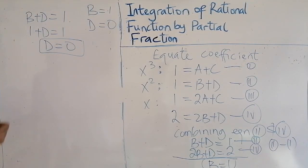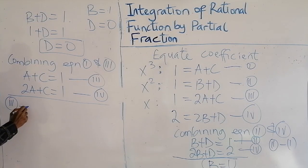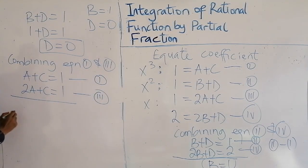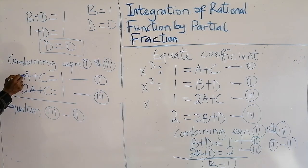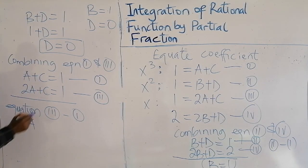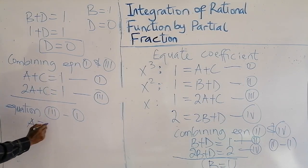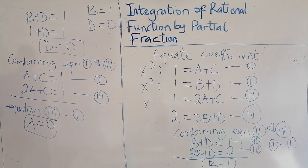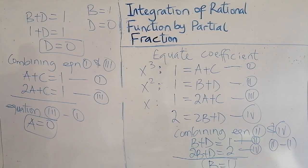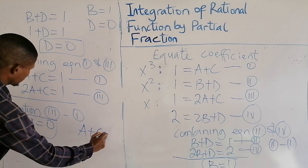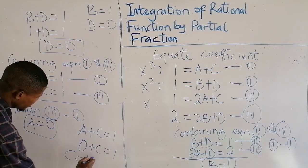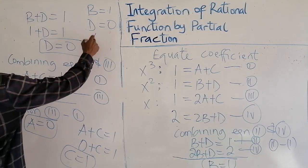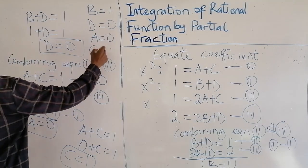Now let's combine equations 1 and 3 together. Subtracting equation 1 from equation 3: 2a minus a gives a, c minus c gives 0, and 1 minus 1 gives 0, so a = 0. Plugging a = 0 into equation 1: 0 + c = 1, so c = 1. We have now found all constants: a = 0, b = 1, c = 1, d = 0.